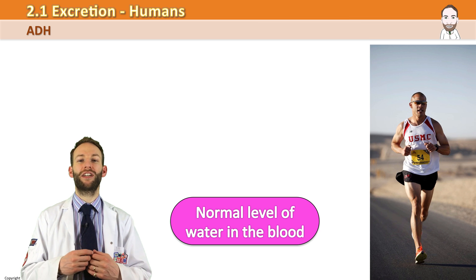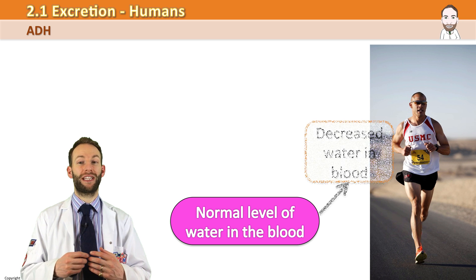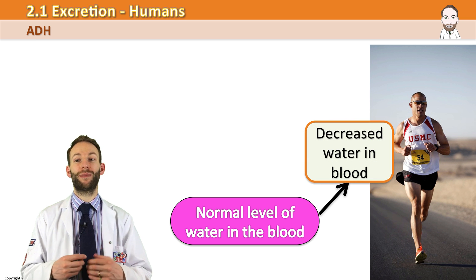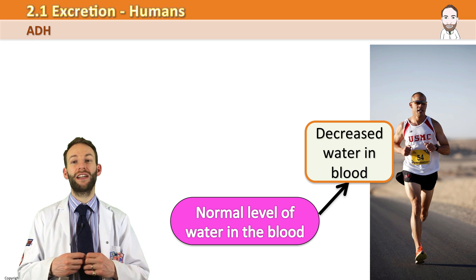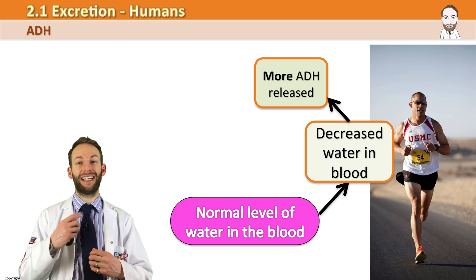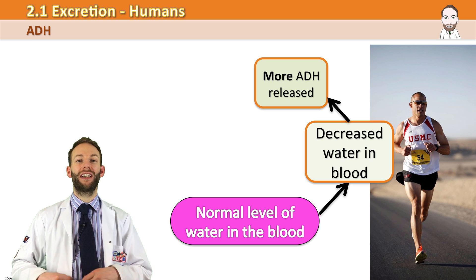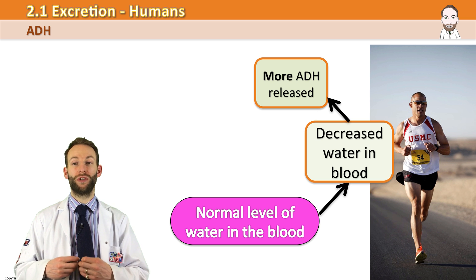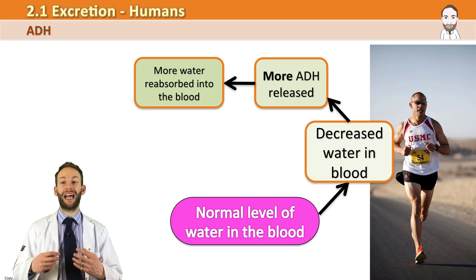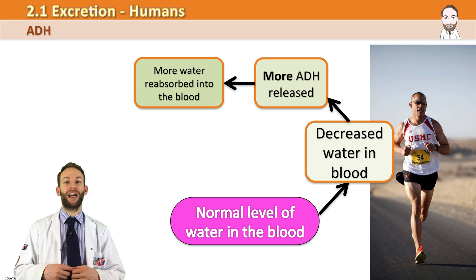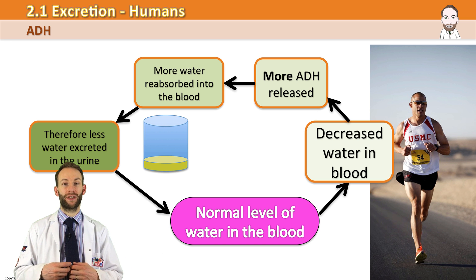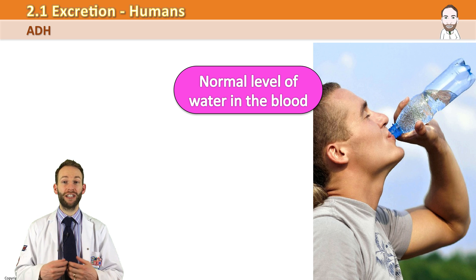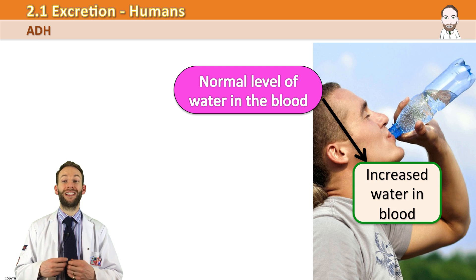Let's take this example: let's say you are dehydrated. You haven't drunk enough water that day, you've been doing some exercise, you've sweated out lots of water. Your hypothalamus detects that and will secrete more ADH. ADH travels to your kidneys in the blood and tells the kidneys to reabsorb more water back into the blood. You do not want to let any water out in your urine, so your urine is very concentrated and you keep more water in your blood.